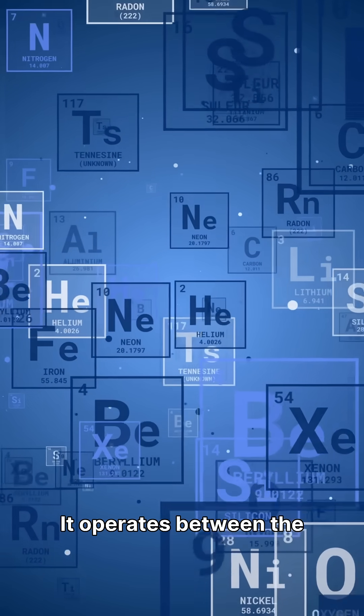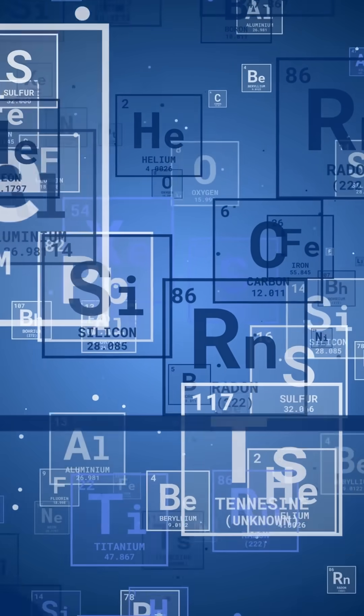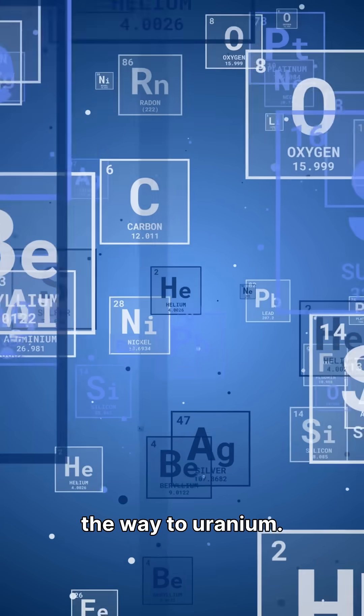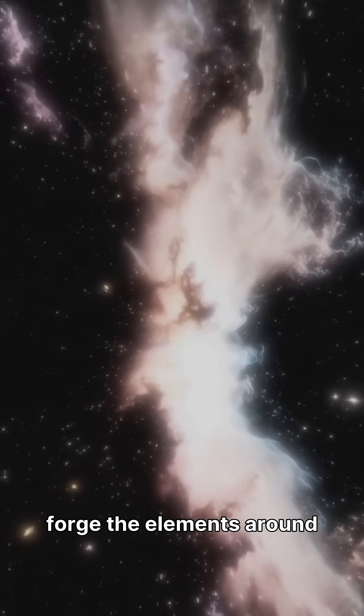It operates between the two extremes, with its own neutron densities and timescales. And here's the wild part. We don't know if it stops at bismuth or goes all the way to uranium. The universe just revealed a third way to forge the elements around us.